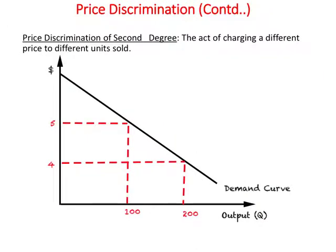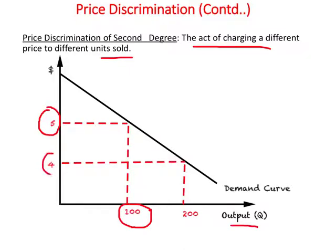Second-degree price discrimination is the act of charging different prices for different units. For example, up to 100 units you pay $5 per unit, but for quantities between 100 and 200 units you pay $4 per unit. The monopolist makes more profits, and this is the phenomenon behind slogans like those at JCPenney and Walmart: the more you buy, the more you save.